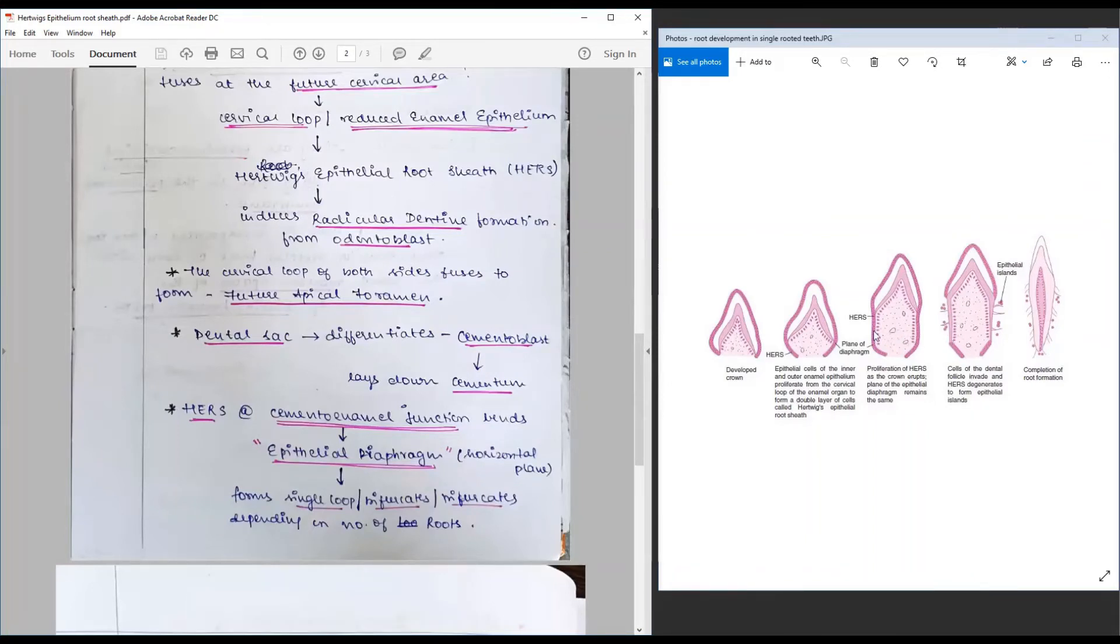When this elongated HERS ruptures or undergoes apoptosis, they rupture and expose the newly formed dentin to the surrounding dental sac, and the outer layer of the dental sac differentiates to form cementoblasts that lays down the cementum.